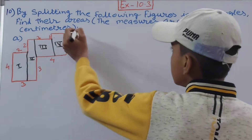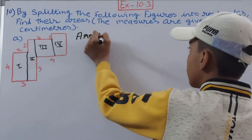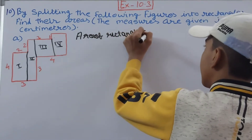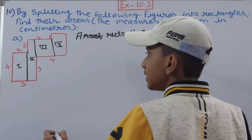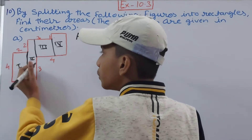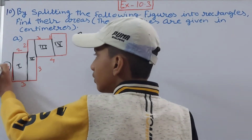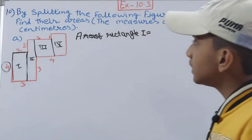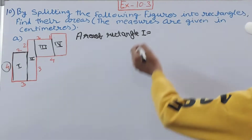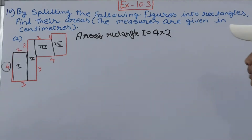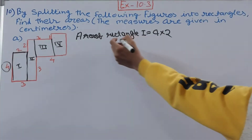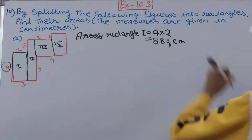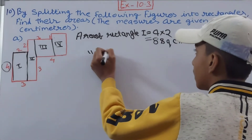For Rectangle 1: the length is already given as 4 cm, and the breadth is also given as 2 cm. So the area of Rectangle 1 = 4 × 2 = 8 square centimeters.